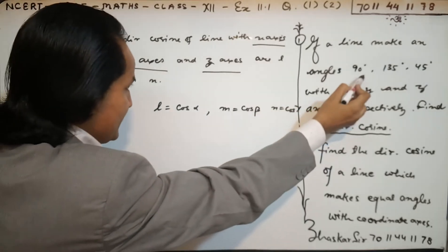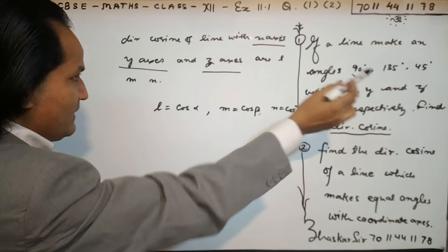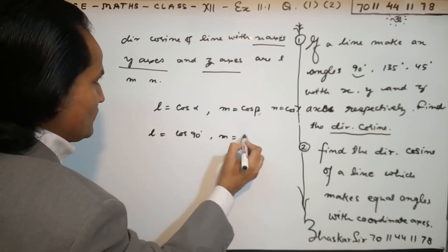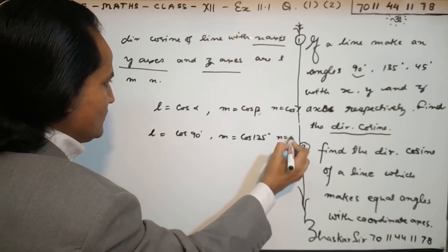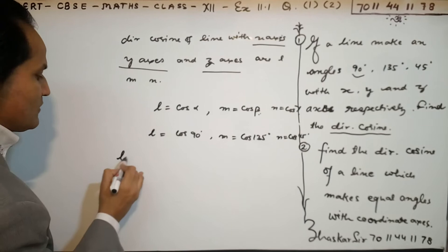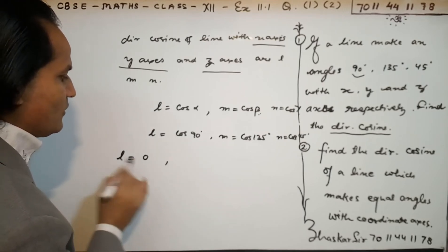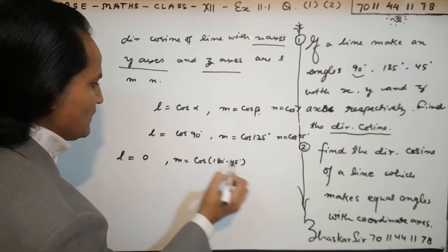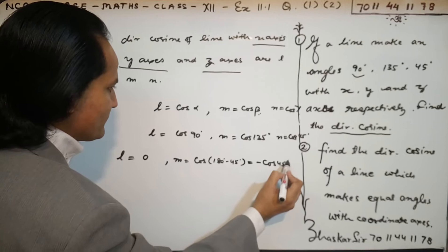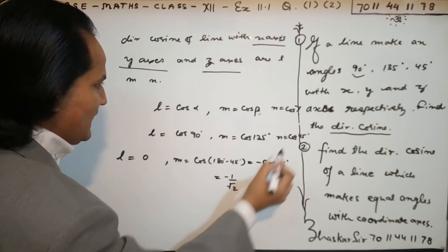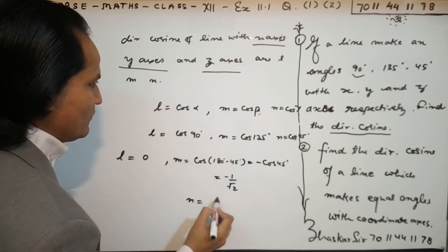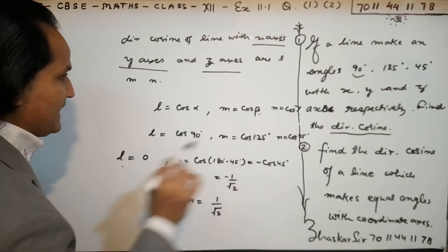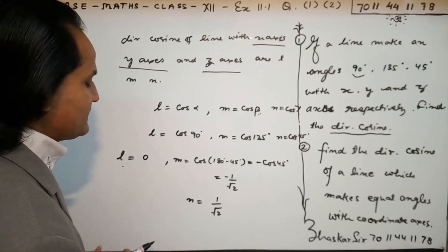Alpha is given here as 90 degrees, beta is given as 135 degrees, and gamma is 45 degrees. So L equals cos 90, M equals cos 135, and N equals cos 45. Now cos 90 equals 0, and cos 135 equals cos(180 minus 45) equals minus cos 45 equals minus 1 upon root 2, and N equals 1 upon root 2. These L, M, and N are called the direction cosines of the line.